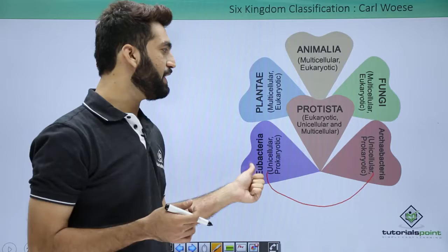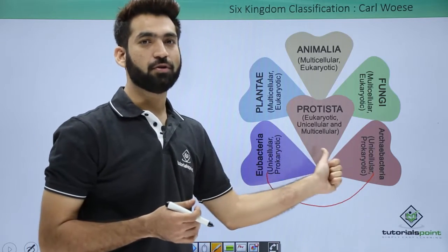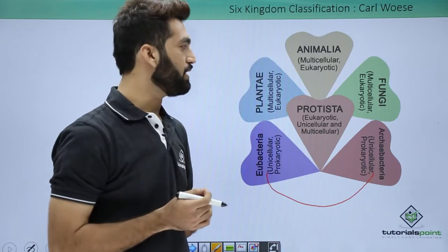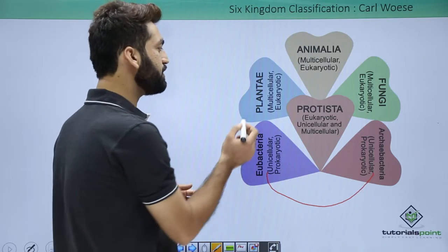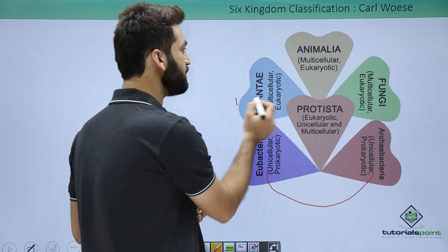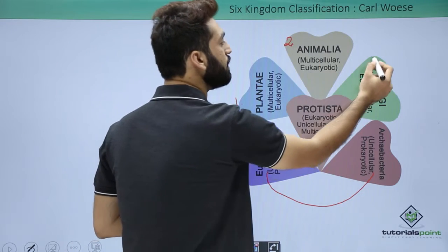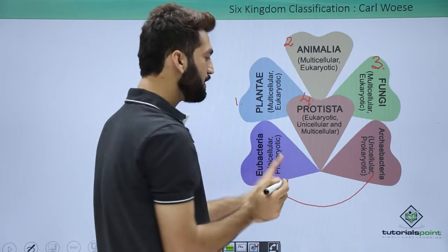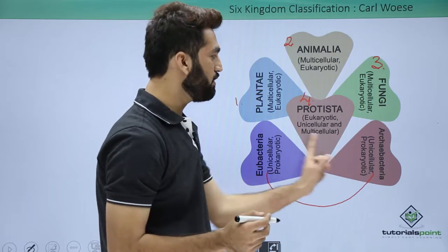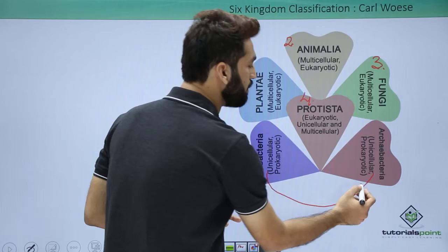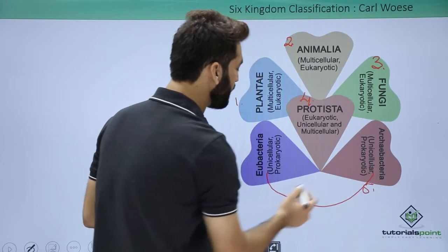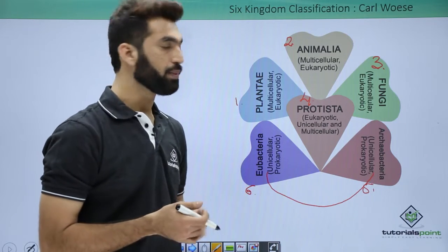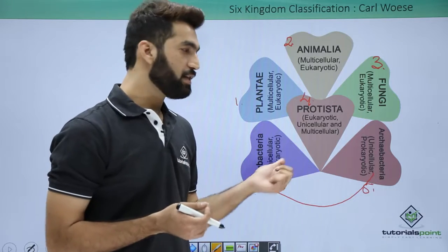So he divided Kingdom Monera into two more groups and came up with the six kingdom classification. The six kingdoms are Plantae, Animalia, Fungi, Protista, and Kingdom Monera divided into two more: the fifth kingdom becomes Archaebacteria and the sixth kingdom becomes Eubacteria — 'eu' meaning true — so they are the true bacteria.